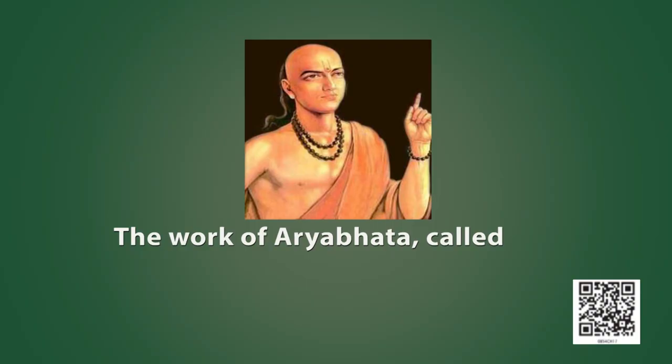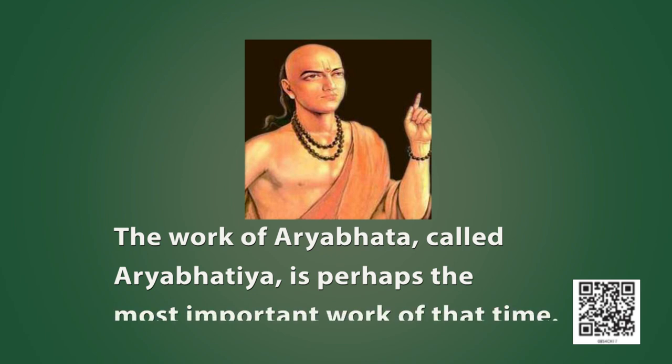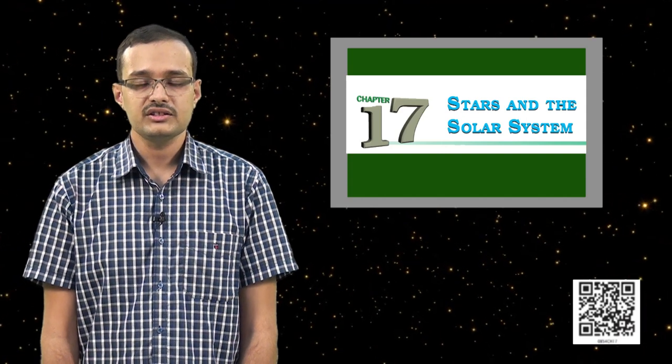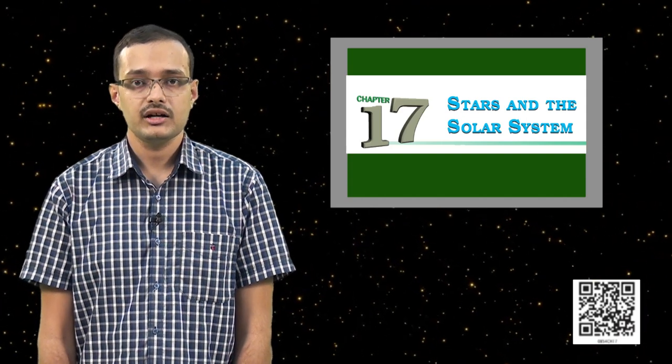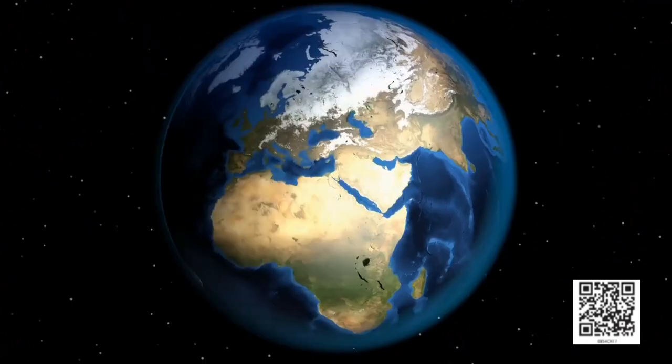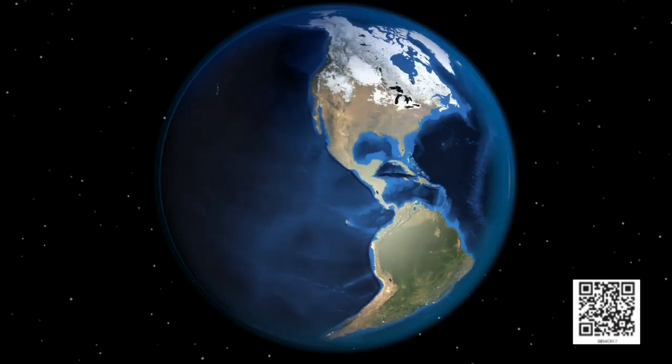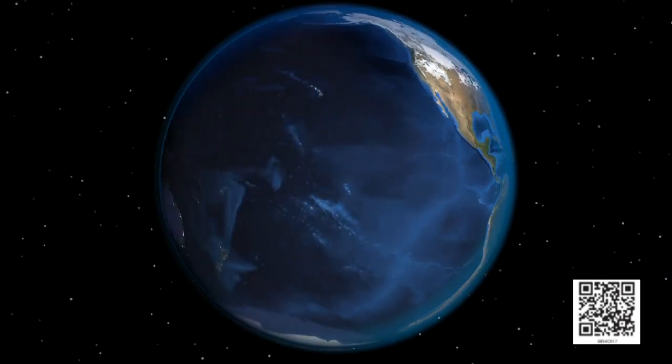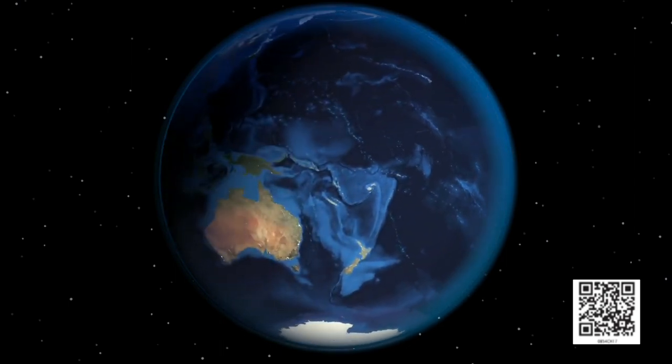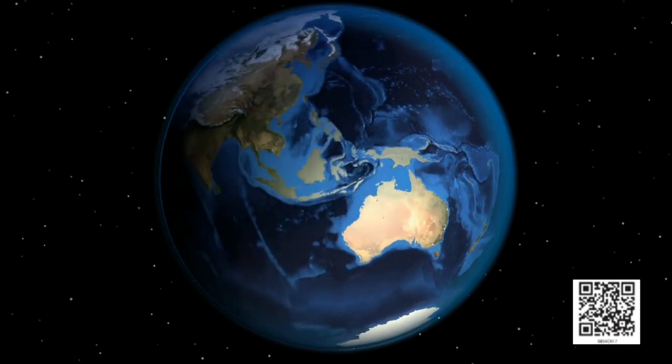The work of Aryabhata, called Aryabhatiya, is perhaps the most important work of that time. For example, in this work, Aryabhata had argued that Earth is spherical and he had given an estimate of the circumference of Earth. This work also mentions the movement of Earth, particularly the rotation of Earth, as the reason for the movement of stars and the sun that we observe.